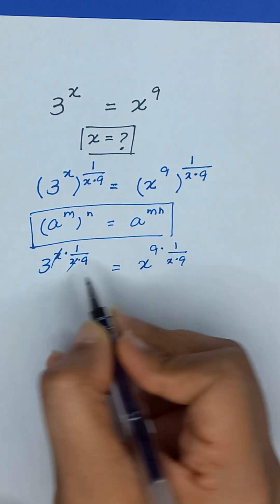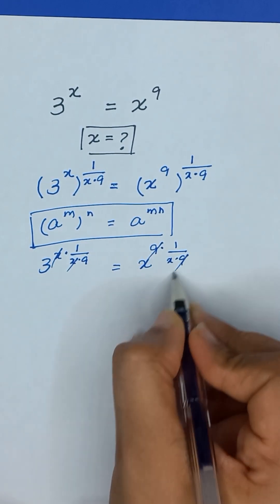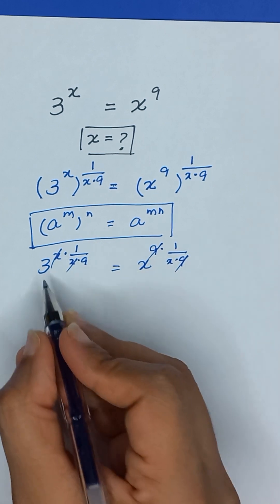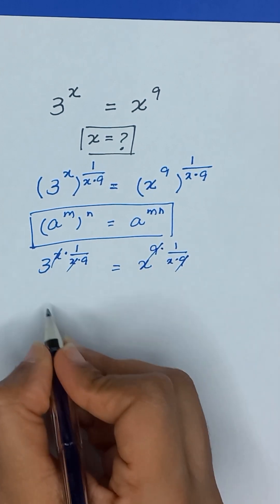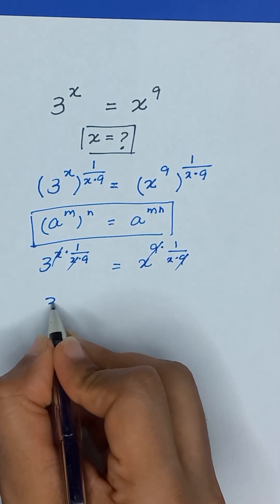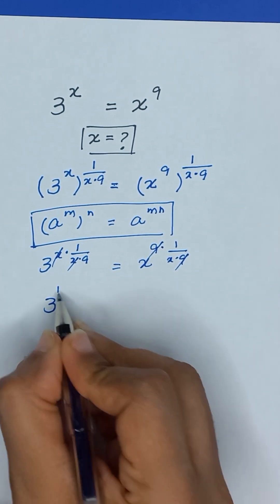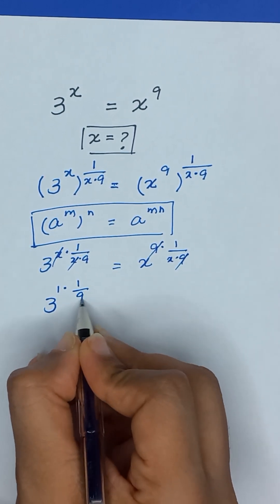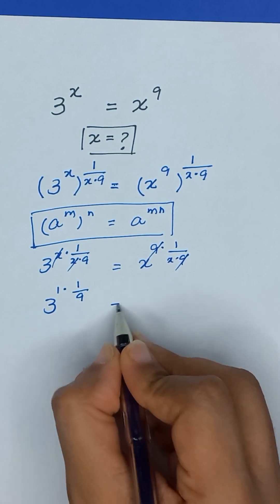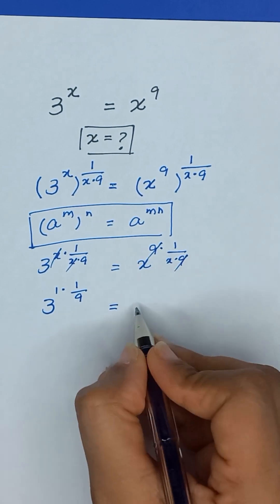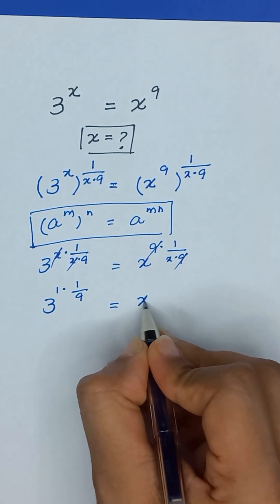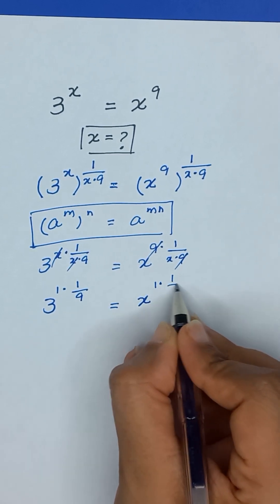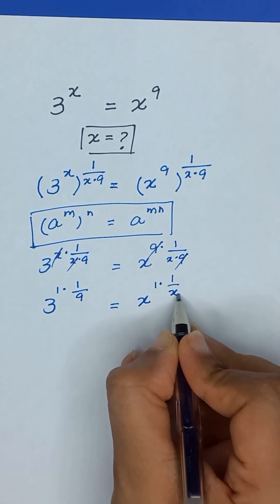This x and x, and 9 and 9, will cancel out. It will become 3 to the power 1 times 1 divided by 9. Similarly, it will become x to the power 1 times 1 divided by x.